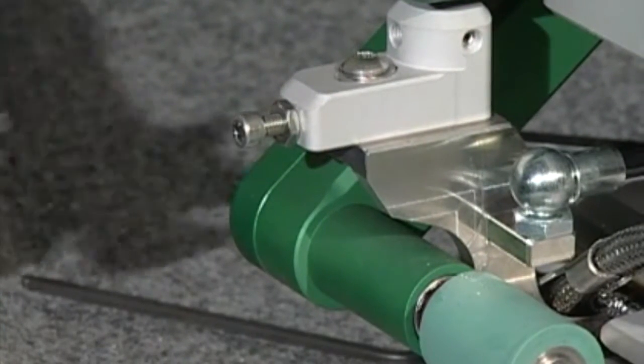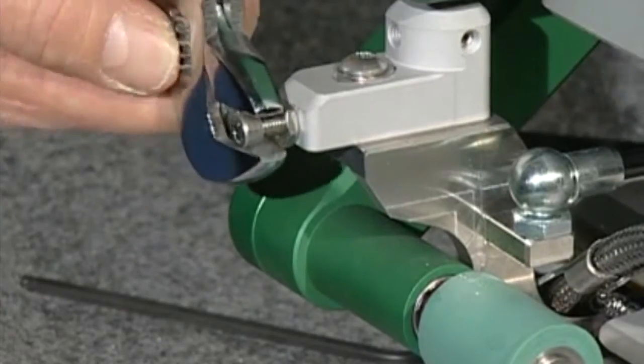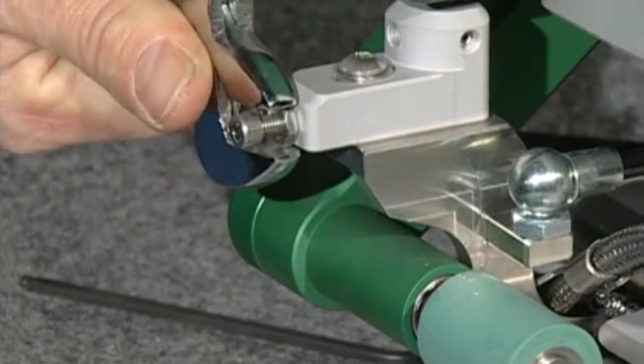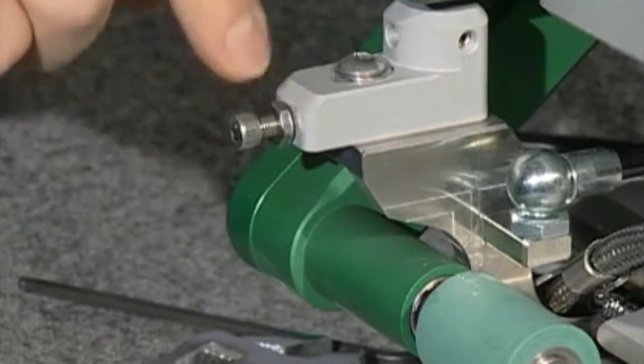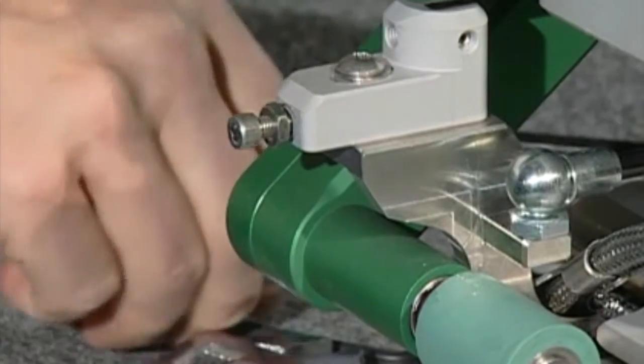When moving the wedge forward or away from the pressure rollers, the gas spring does not have to be removed. Loosen the locking nut from the adjustment screw.